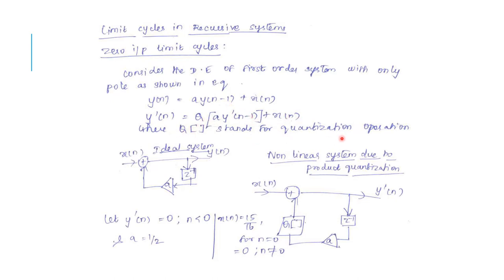The equation now becomes y'(n) = Q[a·y'(n−1)] + x(n), where Q stands for quantization operation. The block diagram representation for the first order recursive system is drawn. For the ideal system, input x(n) gives output y(n) which is delayed and fed back through coefficient a. In the non-linear system due to product quantization, the quantization operation is introduced into the feedback path.